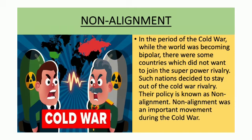Now I am going to explain non-alignment. Do you know what is the meaning of the word non-alignment? Non-alignment means lack of alliance or affiliation with other nations or groups, especially politically. In the period of the Cold War, while the world was becoming bipolar, there were some countries which did not want to join the super-power rivalry. Such nations decided to stay out of the Cold War rivalry. Their policy is known as non-alignment. Non-alignment was an important movement during the Cold War.